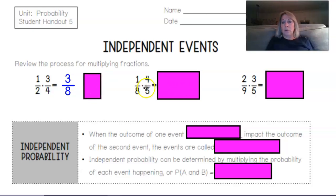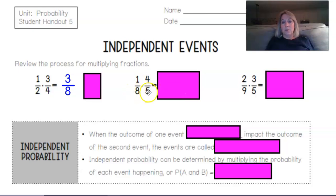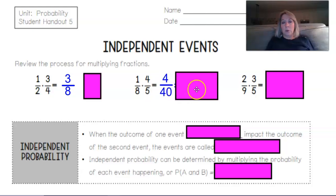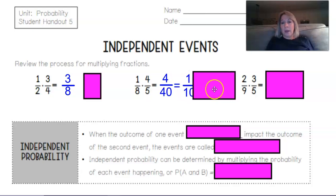Let's review a few more practice problems with multiplying fractions. We have 1/8 times 4/5. So 1 times 4 is 4, and 8 times 5 in the denominator is 40. So that results in 4 over 40. We can simplify that fraction by dividing the 4 and the 40 by 4, and you would see that results in 1/10.